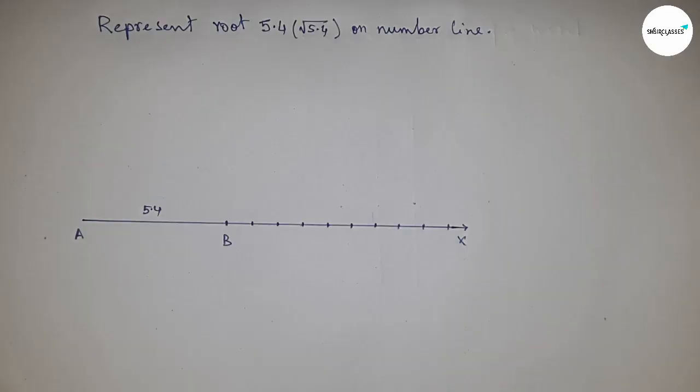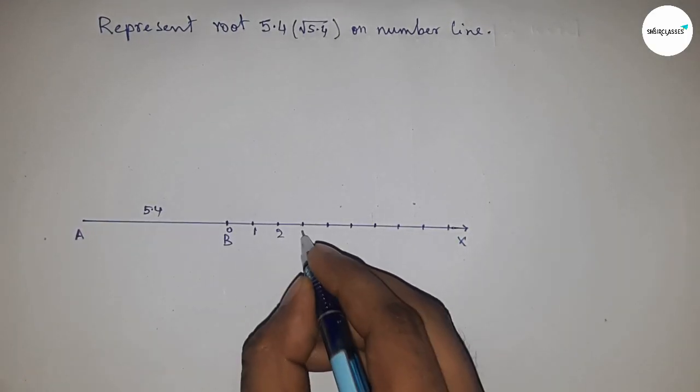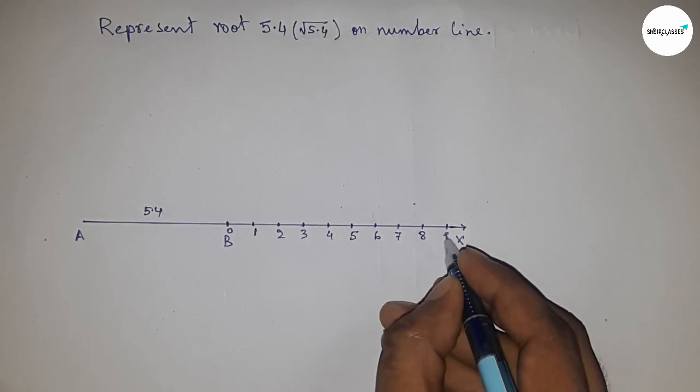So this is 0, 1, 2, 3, 4, 5, 6 and so on. And take this as point C.